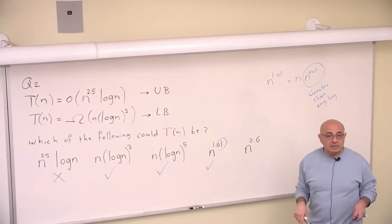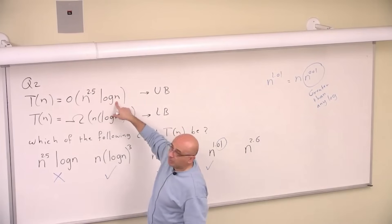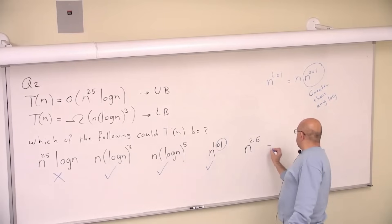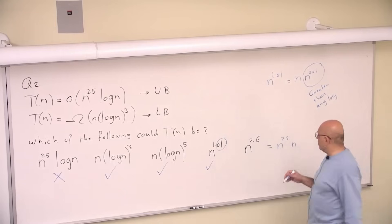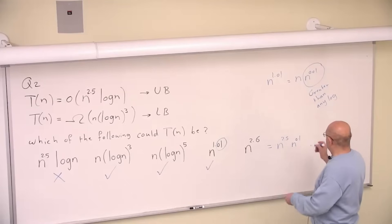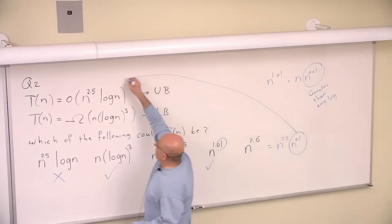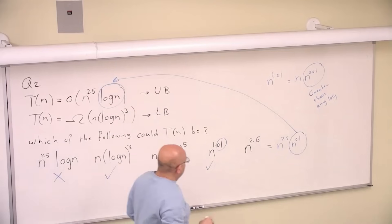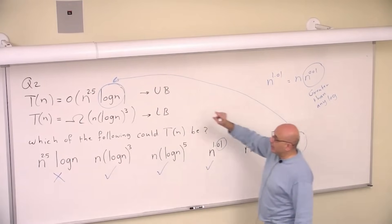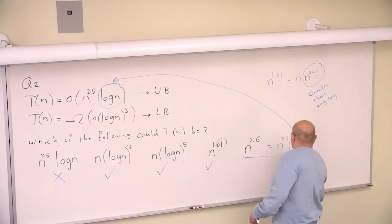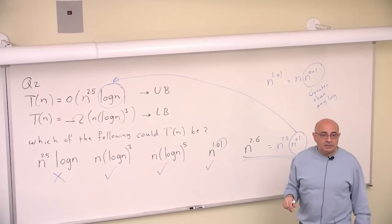How about this? No, because this is greater than this. This is n^2.5 multiplied by log n. The n^2.6 is n^2.5 multiplied by n^0.1. And this n^0.1 is greater than log n — n^0.1 is polynomial, this is log n. So the n^0.1 is greater than log n, which means that n^2.6 is greater than n^2.5 multiplied by log n.